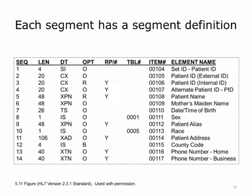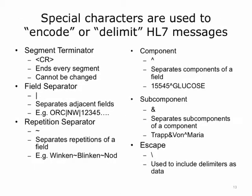Each segment has a segment definition. This is the segment definition for the patient identification segment, PID. A segment definition includes a sequence number — just a logical sequence of the field within the segment — a suggested maximum length for the field, and a data type for the field. The data type can be simple or complex, and if it is complex, it is further broken up into components and subcomponents. Special characters are used to encode or decode HL7 messages. The segment terminator ends every segment and cannot be changed. The field separator separates adjacent fields. The repetition separator separates repetitions of a field, the component separator separates components of the field, and the subcomponent separator separates subcomponents of a component.